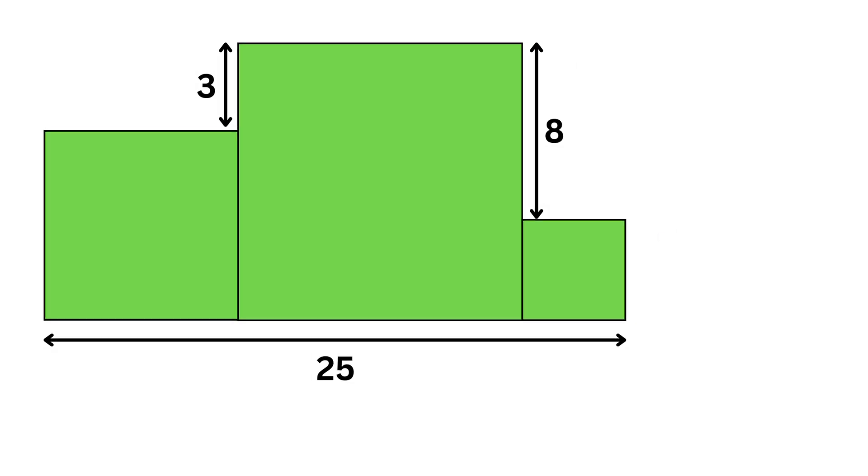In this question, we have three green squares placed side by side – one small, one medium, and one large. Some measurements are given here like the total bottom length is 25, the vertical gap between these two squares is 3, and the vertical gap between these two squares is 8. Our goal is to find the total area of all three green squares combined. So can you solve it?